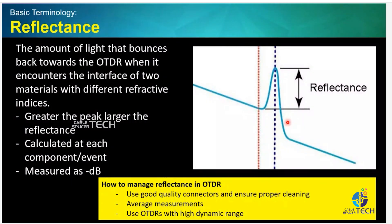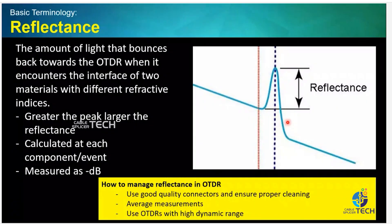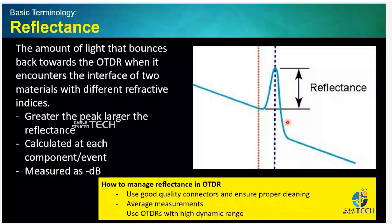When there is a splice, there will not be any reflectance. Whenever there is a connector, there is a reflectance. So the statement is: all connectors have reflectance values, and all splices do not have any reflectance.